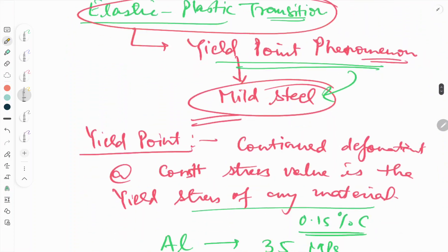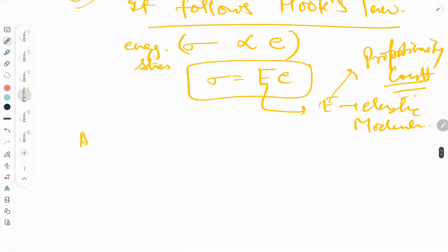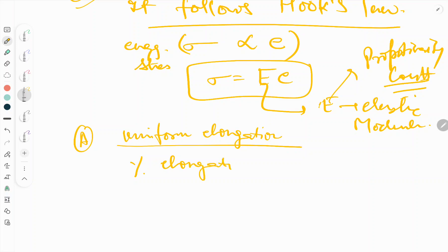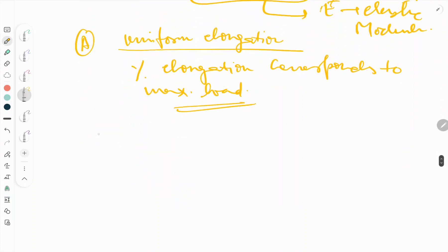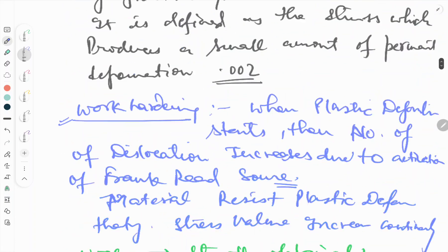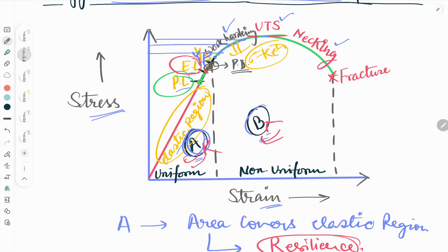Now we will see about uniform elongation, which is region A. Uniform elongation is the percentage elongation corresponding to maximum load. This is the A region in the engineering stress-strain curve. Non-uniform elongation covers the work hardening region up to UTS and up to necking — this is the complete non-uniform elongation.